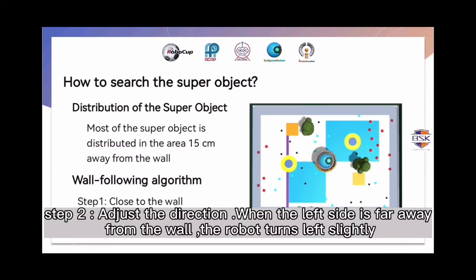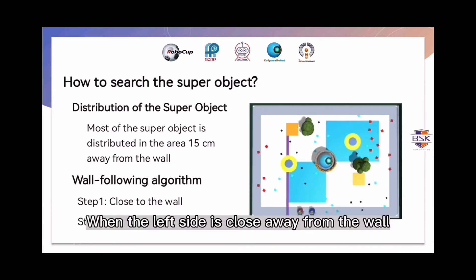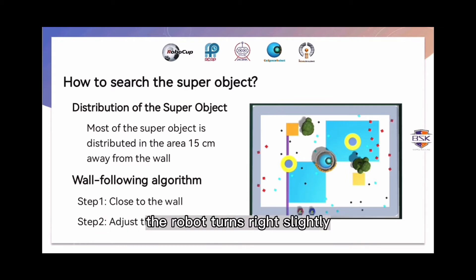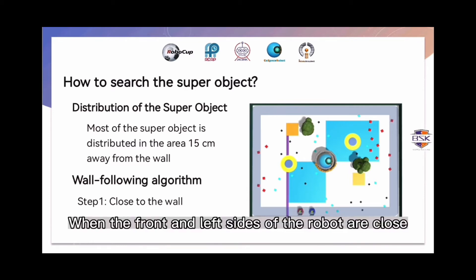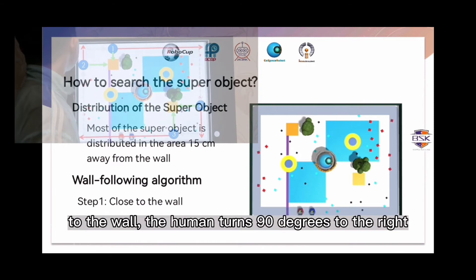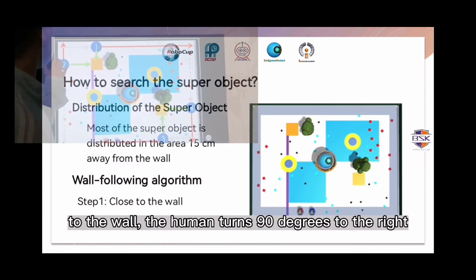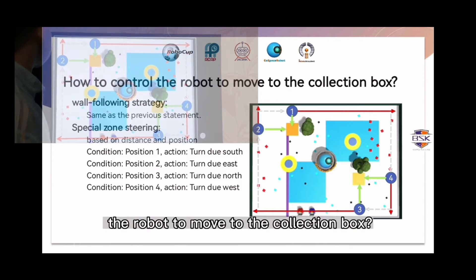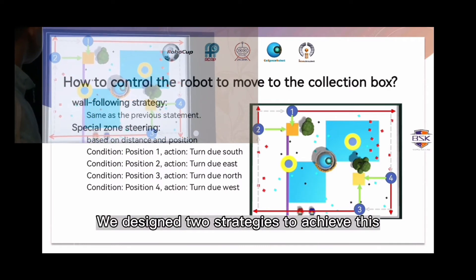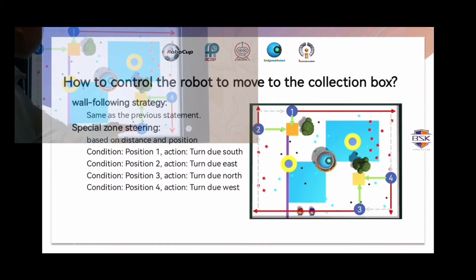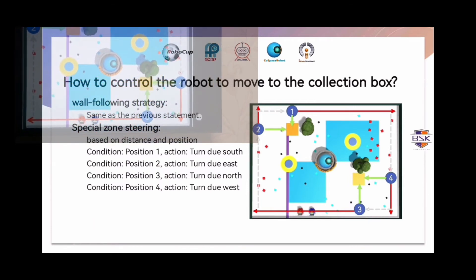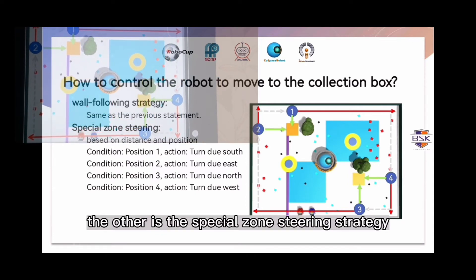Step 2: Adjust the direction. How to control the robot to move to the collection box?